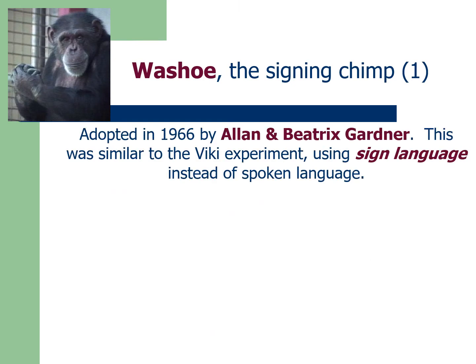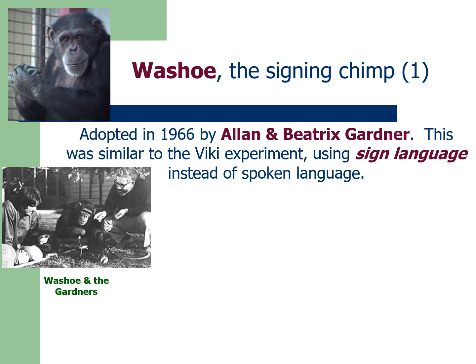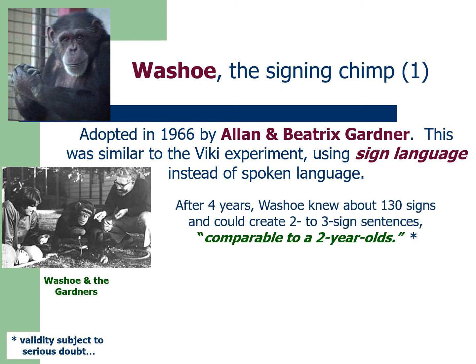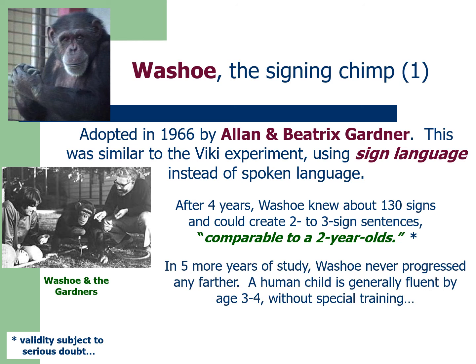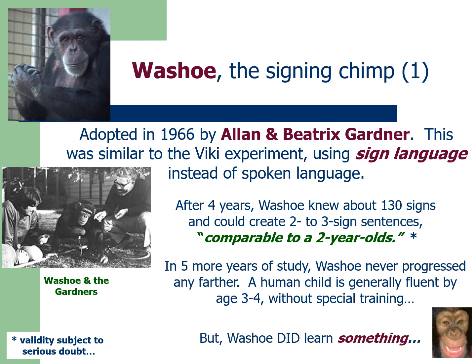Next, researchers tried to teach a chimp named Washoe to communicate using sign language instead of spoken language. After four years, Washoe could sign about 130 signs, similar to a two-year-old. However, it didn't seem that he had any syntax in his signing. The interesting thing is that he did seem to learn something, but it needed to be validated.